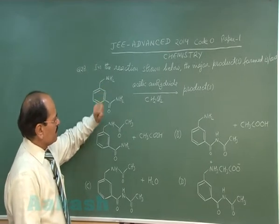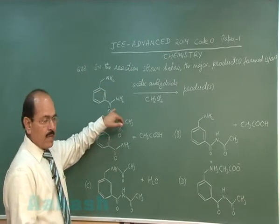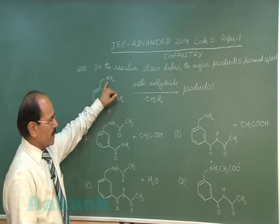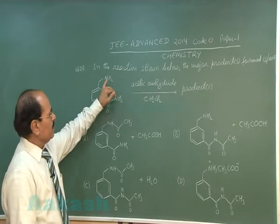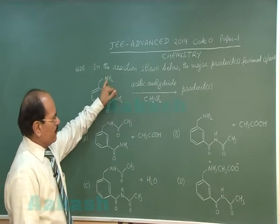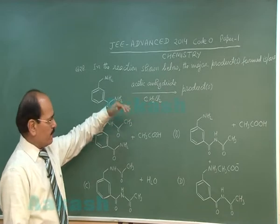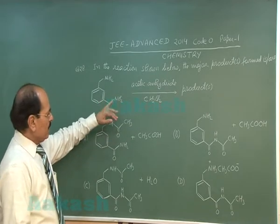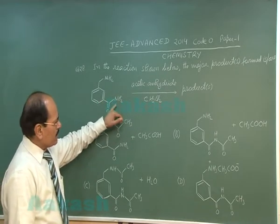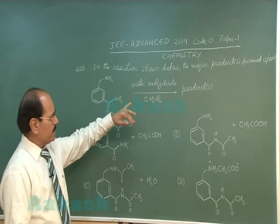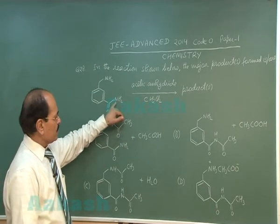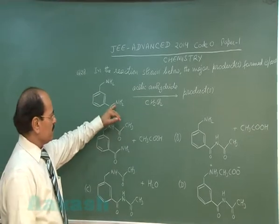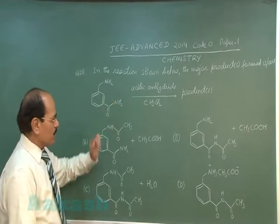Amine being more basic than amide, the lone pair of electrons at nitrogen is fully available, so the amine part reacts with acetic anhydride forming an amide. The amide does not react with acetic anhydride because the lone pair of electrons at nitrogen is partially available — it is in resonance with the carbonyl group.